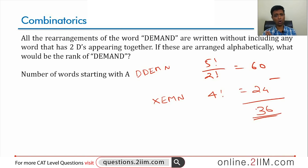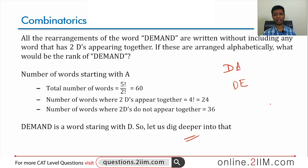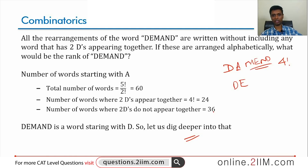All 36 words starting with A go before DEMAND, so we put 36 in the bank. DEMAND starts with D, so let's dig deeper. Starting with D, the next letter alphabetically would be A (giving D-A words), then E. All words starting with D-A go before DEMAND. After fixing D-A, the remaining letters M, E, N, D can be rearranged in four factorial, or 24 ways. So 24 words starting with D-A go in the bank.